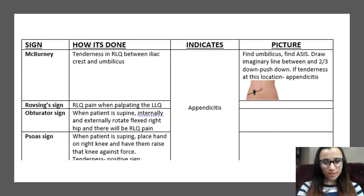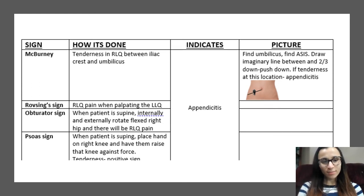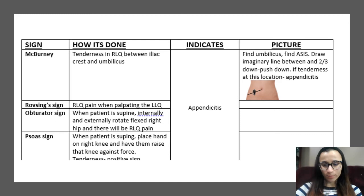The way I like to remember those appendicitis signs is PROM: P stands for Psoas, R stands for Rovsing's, O stands for obturator, M stands for McBurney's. So PROM.